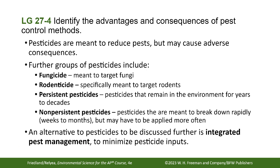Pesticides are meant to reduce pests but can also cause adverse consequences. Major groups of pesticides include fungicides targeting fungus and rodenticides targeting rodents. Persistent pesticides remain in the environment for decades. Non-persistent pesticides break down rapidly in weeks or months but may need to be applied more often. For example, Roundup is a non-persistent pesticide — but prolonged exposure has been linked to cancer, as in the case of Miss Collins's father.